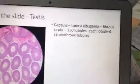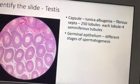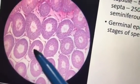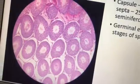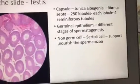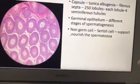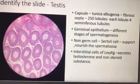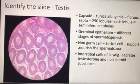In between the cells you have interstitial cells of Leydig, which produce testosterone (a steroid) as well as non-steroidal hormones. The germinal epithelium shows different stages of spermatogenesis with the spermatid at the tip. The non-germ cell is the Sertoli cell, whose main function is to support and nourish the spermatozoa.